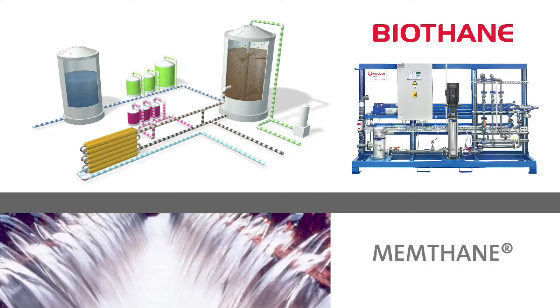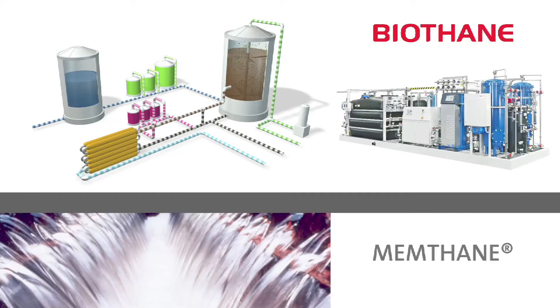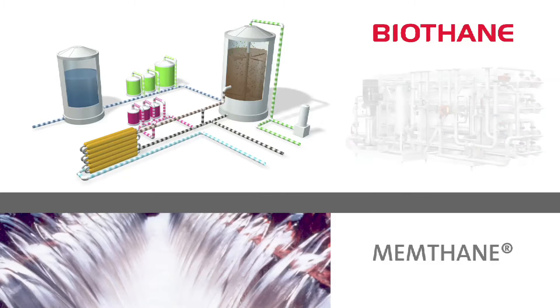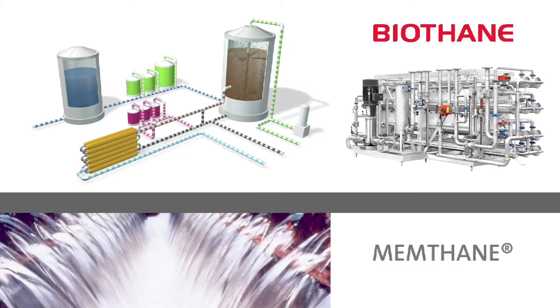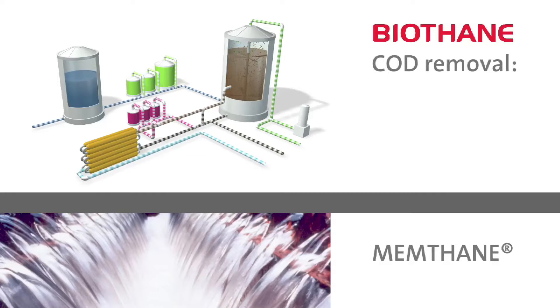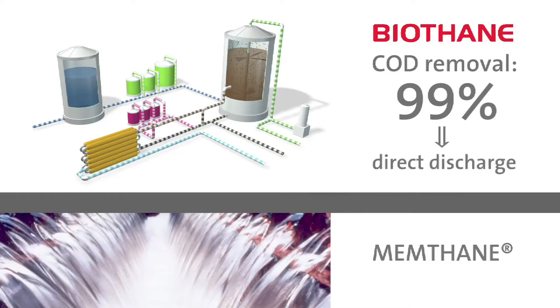Nutrients can thus easily be removed or recovered while the permeate is ideal for RO treatment and reuse in the production. Due to the COD removal efficiency of usually more than 99% direct discharge is possible.